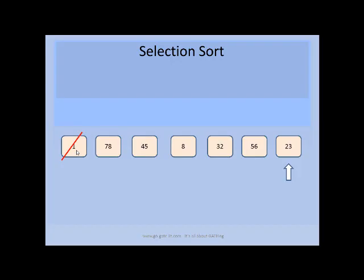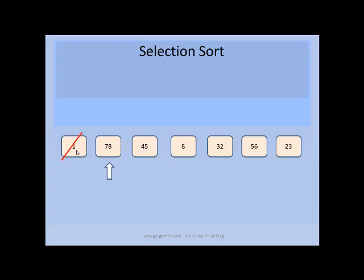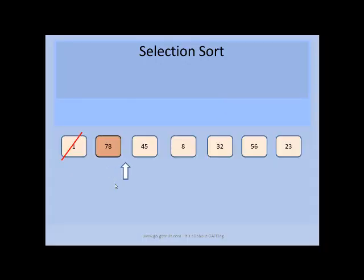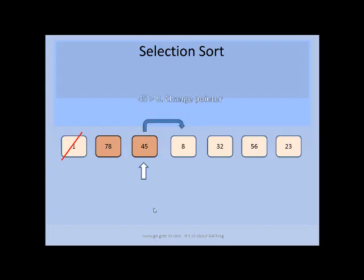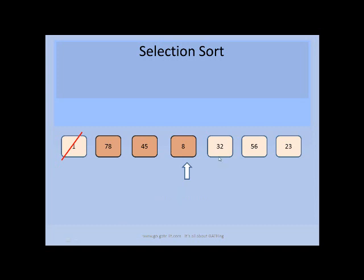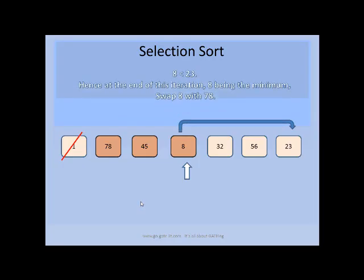After the first iteration, 1 is placed at the first position at its best place. Our next goal is to update the minimum pointer to point to 78. Now 78 is the current minimum, and we compare the rest of the elements with 78. We find that 78 is greater than 45, so we immediately change our pointer to 45. Continuing, 45 is compared with 8, 32, 56, and 23, and we find that 8 is again the smallest element, so we swap 8 with 78.